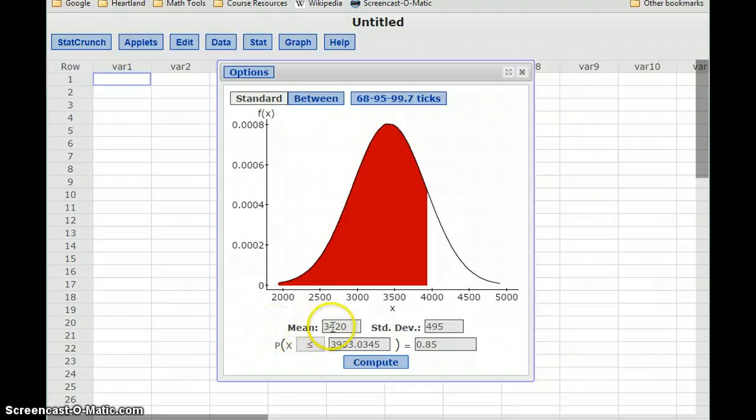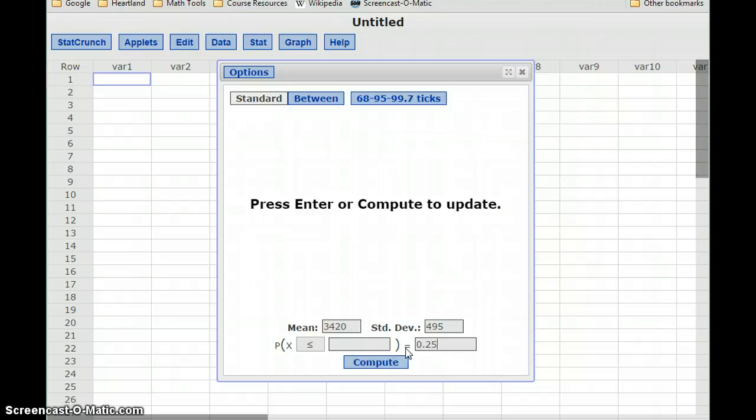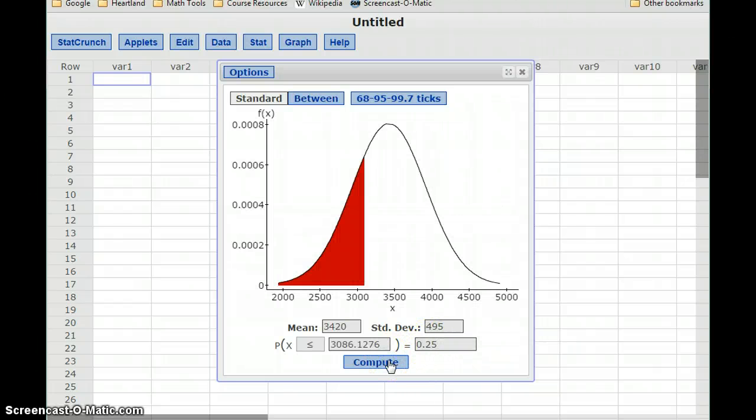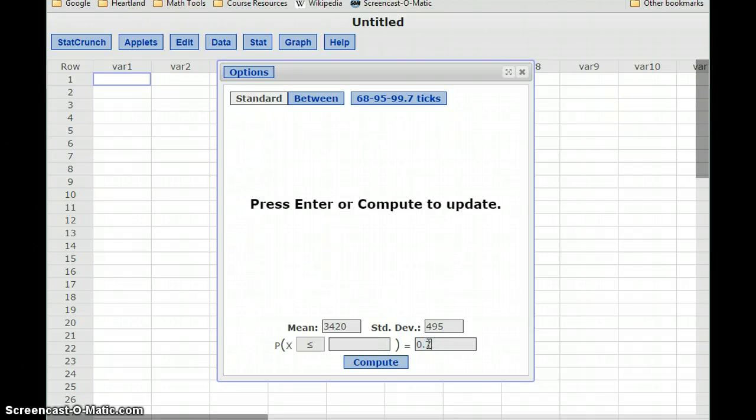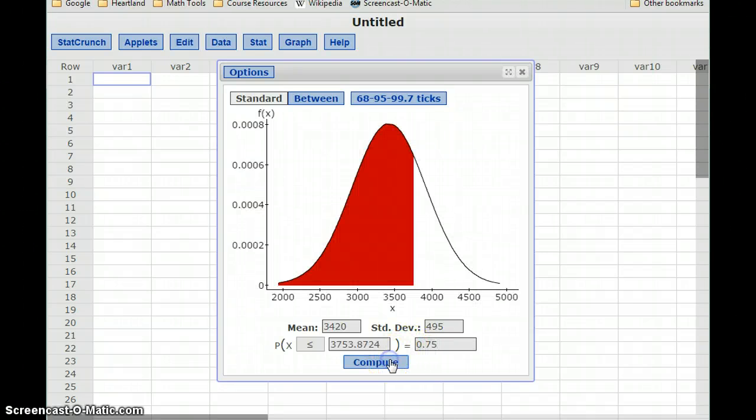So flipping back to StatCrunch, we're still using the same mean and standard deviation. We want to find the cutoff score that is the 25th percentile. So we want x to be less than some number that gives us a probability of 25%, and that value is going to be 3086.1276. And then we want to find the same thing for the 75th percentile, which is going to be 3753.8724.